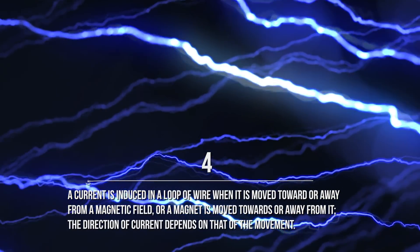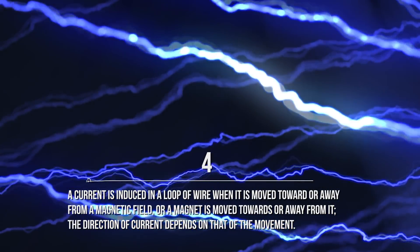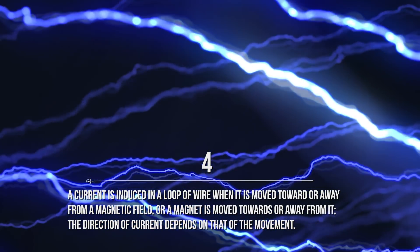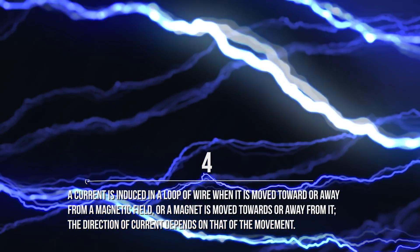4. A current is induced in a loop of wire when it is moved toward or away from a magnetic field, or a magnet is moved toward or away from it. The direction of the current depends on that of the movement.